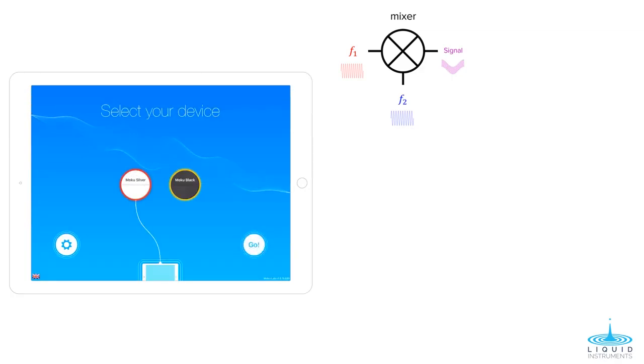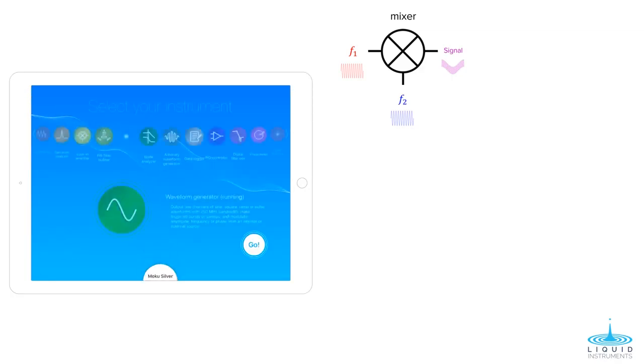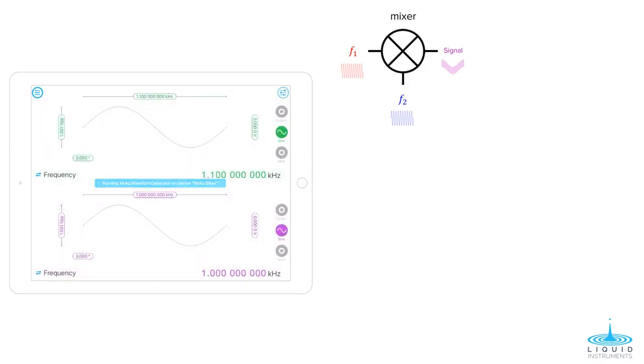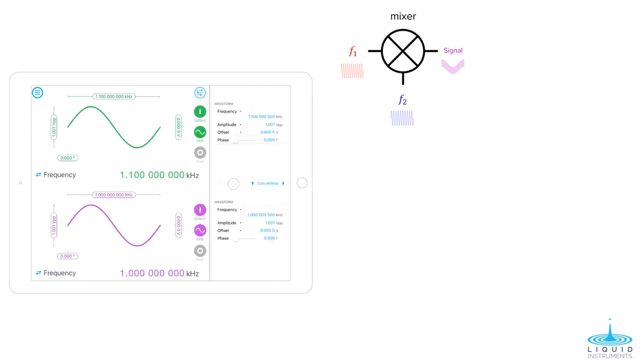Taking an iPad, we are going to connect to the silver Moku, then launch the waveform generator instrument. We output two sine waves, one at 1kHz and one at 1.1kHz, and synchronize the phases.